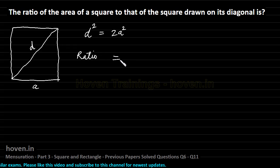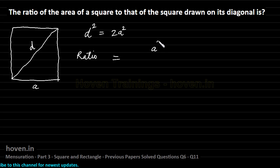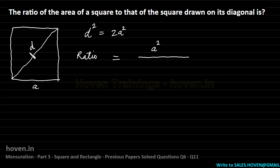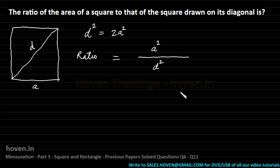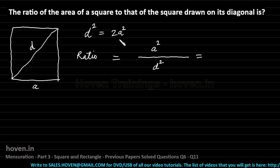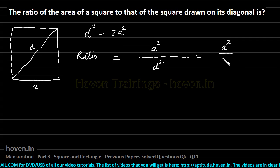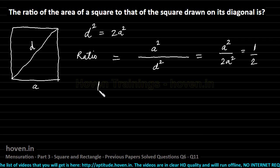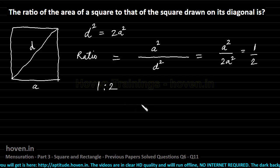The area of the square on side A is A squared. When you create a square on the diagonal, the side of that new square becomes equal to the diagonal, so its area is D squared. The ratio is A squared to D squared. Since D squared equals 2A squared, we can substitute to get A squared by 2A squared. Cancelling A squared, we are left with 1 by 2. So the required ratio is 1 is to 2.